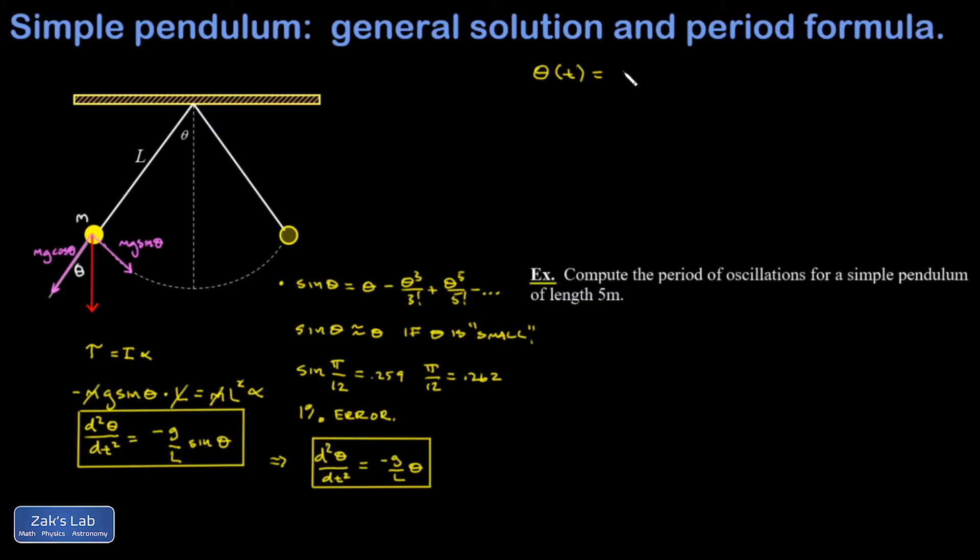is given by sines and cosines with a factor of root g over L in front of the t. And I do have space here to verify that this actually solves the differential equation.